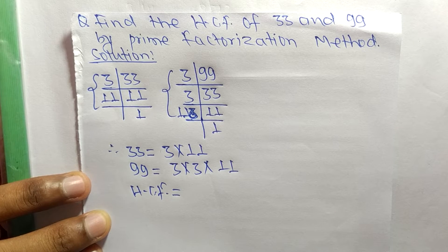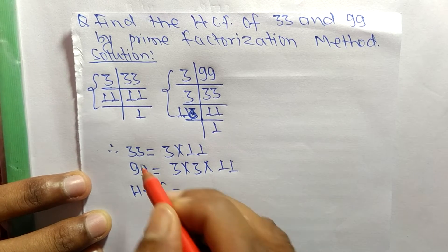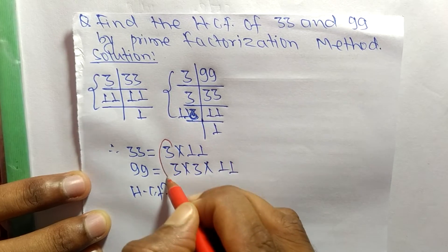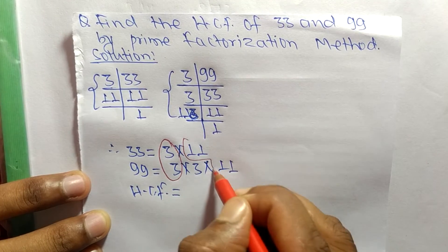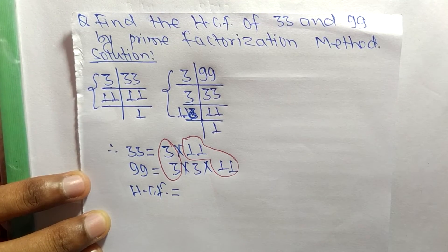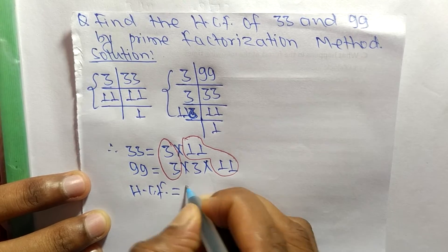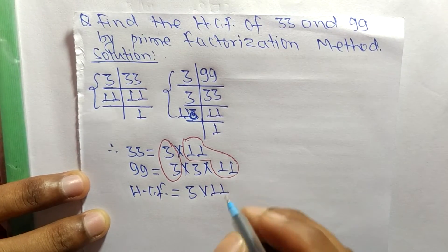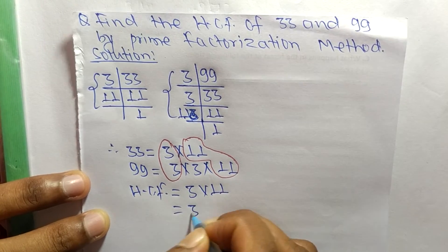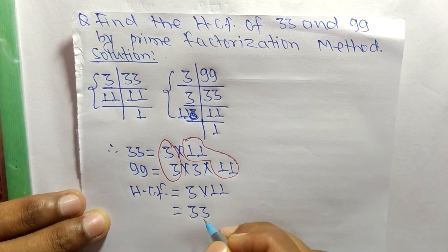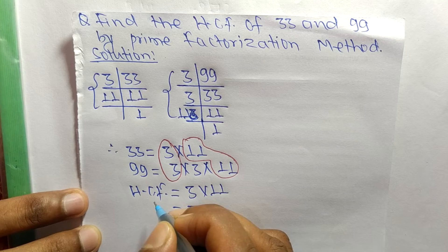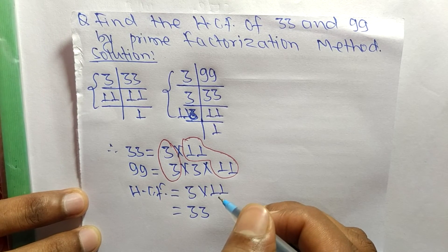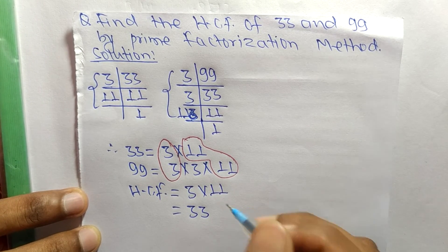We find the common factors in the prime factors of 33 and 99. The common factors are 3 and 11. So HCF is equal to 3 times 11, which equals 33. Therefore, 33 is the HCF of 33 and 99. Thanks for watching.